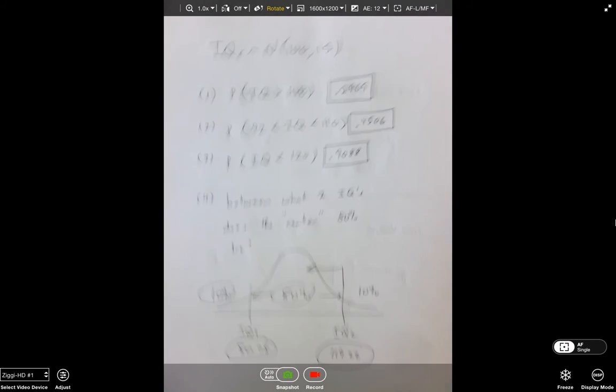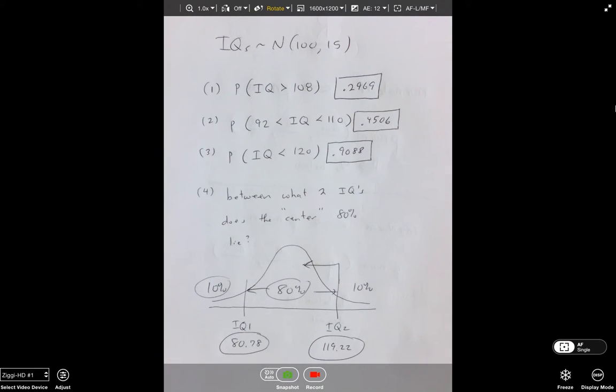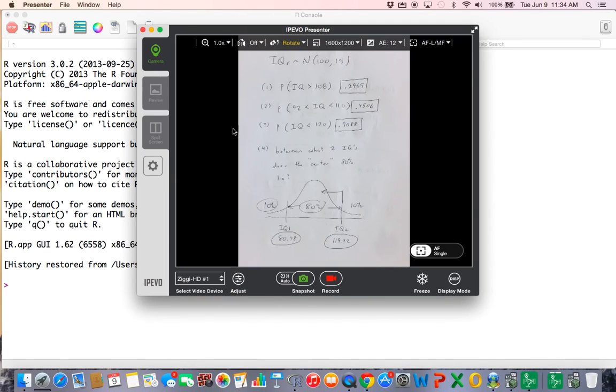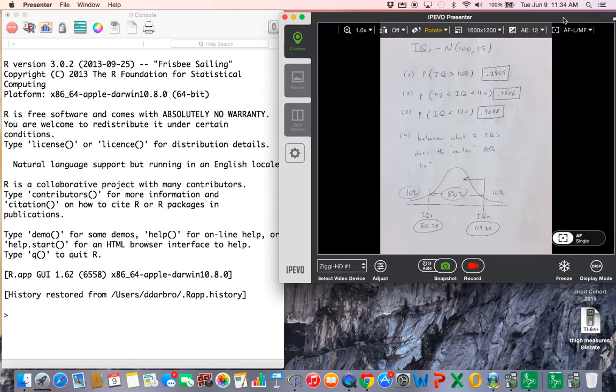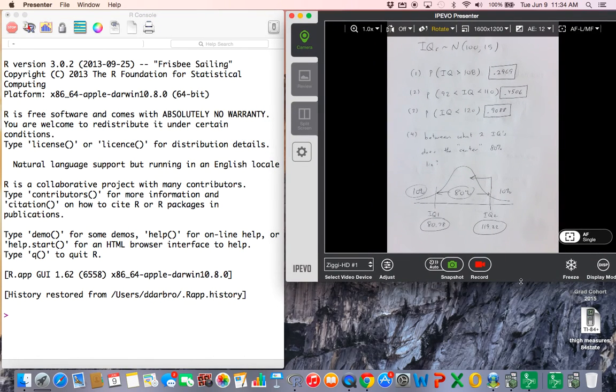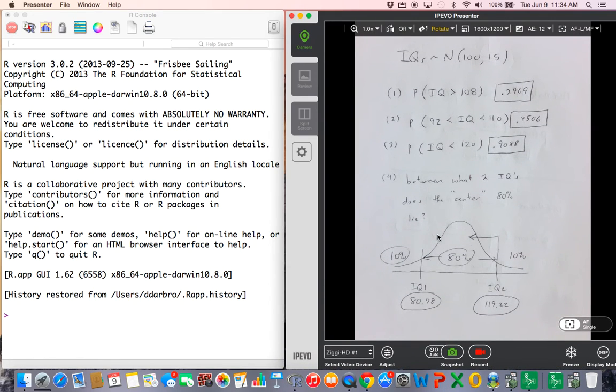All right. So let's see how we would work these four problems. I think it would be kind of helpful here if I got into a split screen situation. Let's see if I'm clever enough to pull something like that off. Hopefully, I can make that happen. All right, gang. So if I'm going to work problem number one over here on R, I want percent below. So I know the total area is one. So I'm going to take one minus the P norm of 108, comma 100 comma 15, and I will get the same answer.